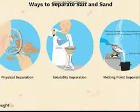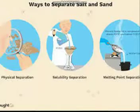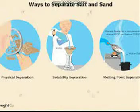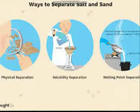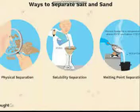To separate salt and sand: first, make a solution of salt and water. Salt is soluble in water but sand is not. Then use filtration paper to filter the solution. The water and salt solution comes down into the beaker, while sand is separated by the filtration paper. To then separate the salt from the water, use evaporation. So three methods are used: making the solution, filtration, and evaporation.